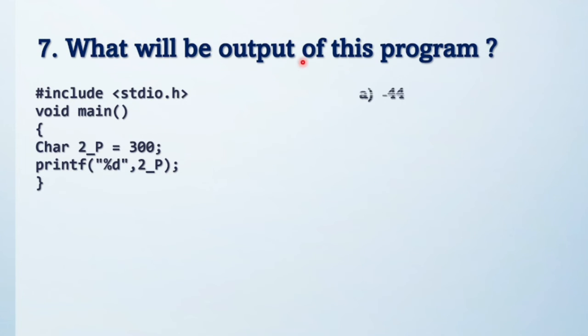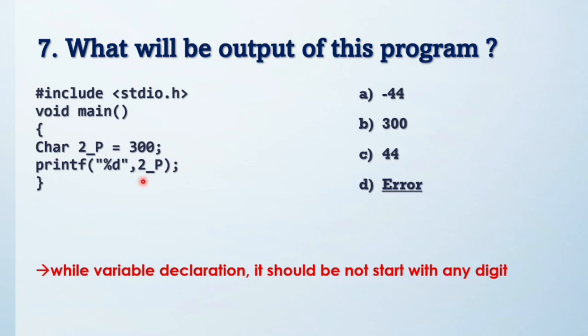Next question: what will be the output of this program, friends? Try to solve first. These are the options. So no need to solve this question because you can see here the variable starts with a digit, so it will generate an error. While declaring a variable, it should not start with any digit—that is the condition. So error is the answer.